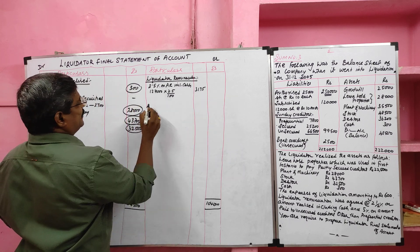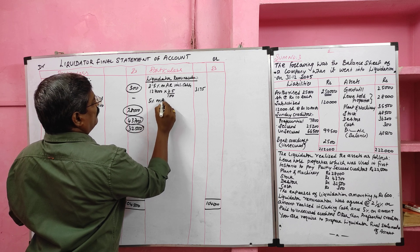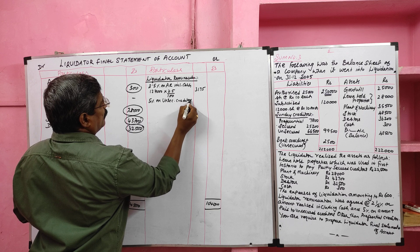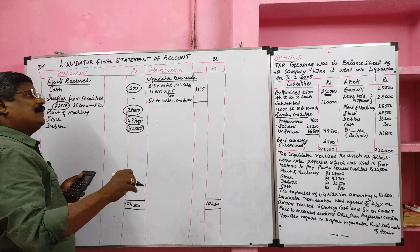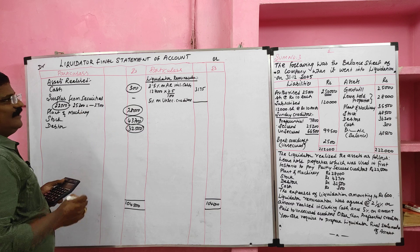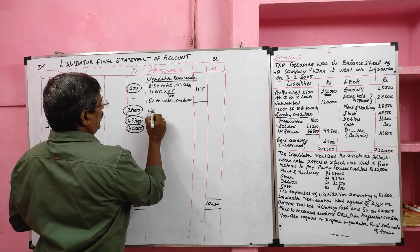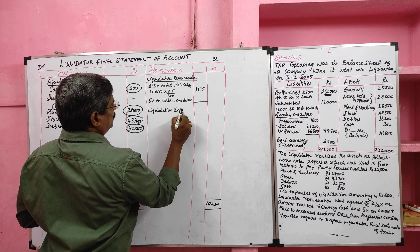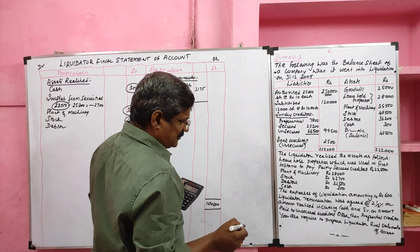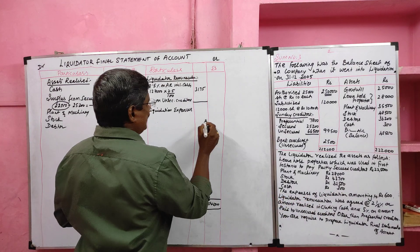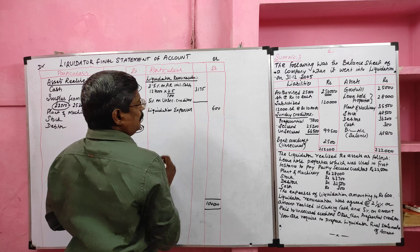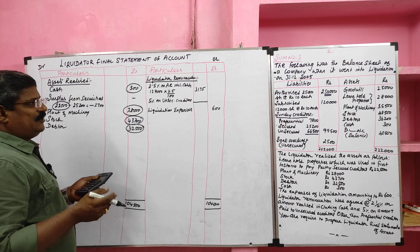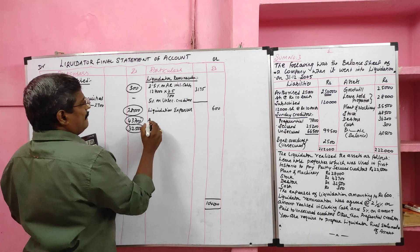The liquidator is also entitled to 5 percent on payment made to unsecured creditors. When making payment to unsecured creditors, we calculate this commission. Next, we pay for liquidation expenses. The expenses of liquidation are rupees 600, as given in the question. After that, we check for debenture holders with floating charge — in this question, debenture holders are not given — then we move to the preferential creditor.